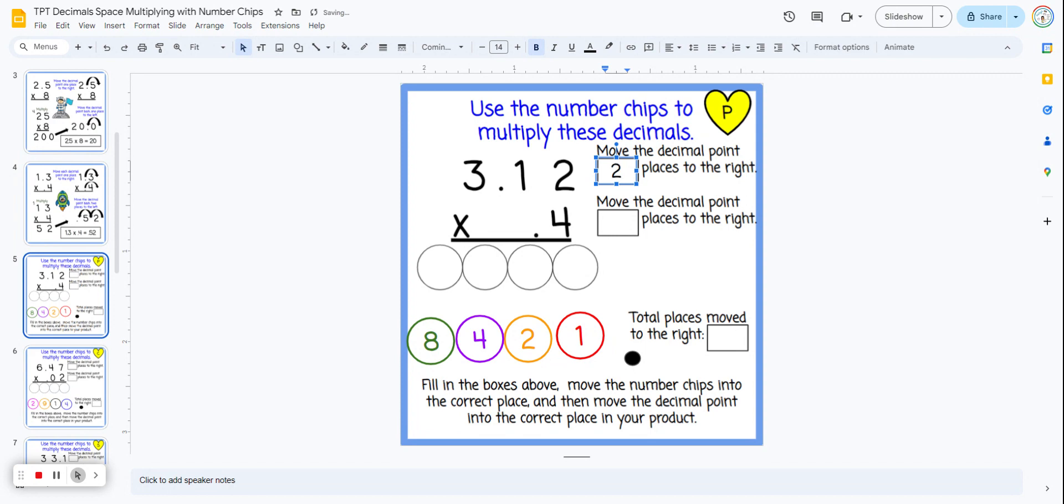Here they have to move it two places to the right to make it a whole number, and then the second row they have to move one place to the right. So that means they're moving a total of three places to the right, so the first thing they want to do is fill out these three boxes.